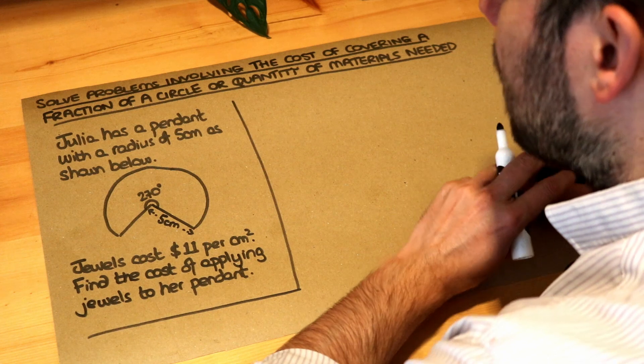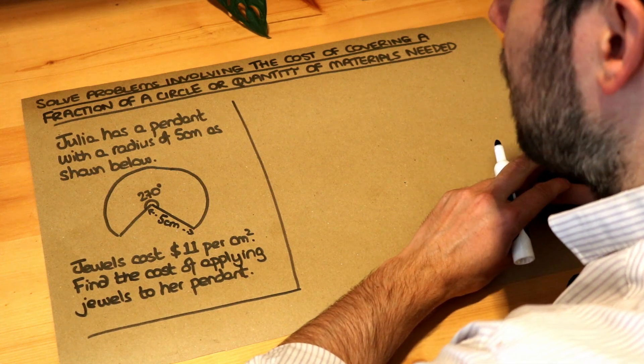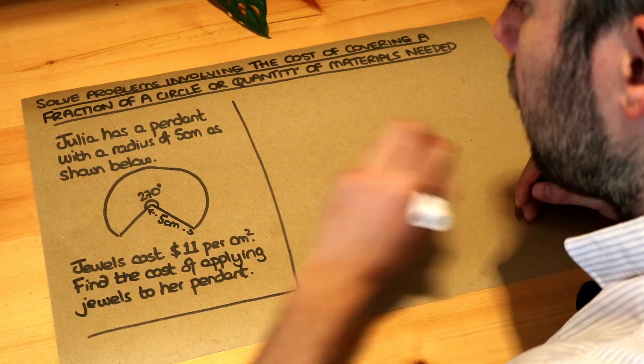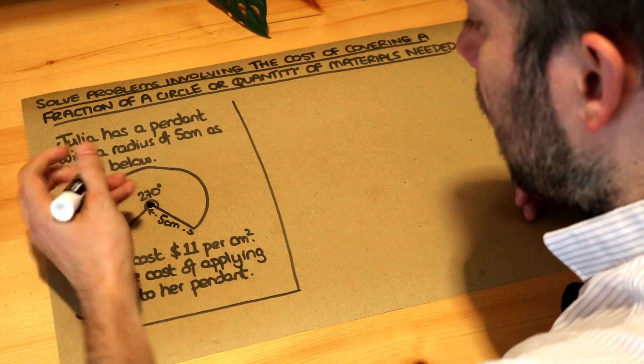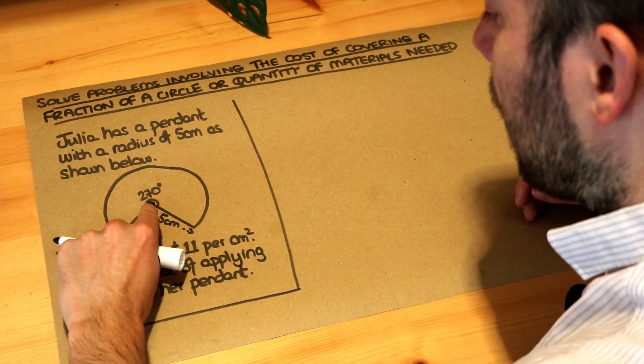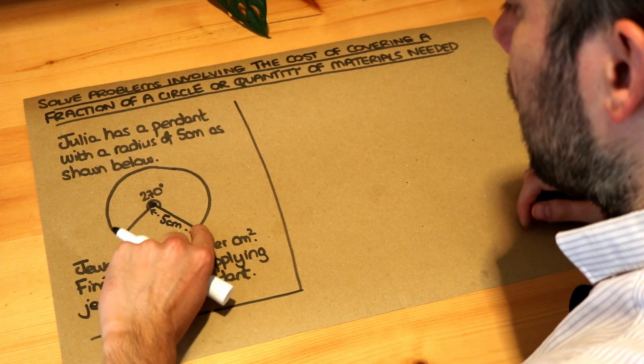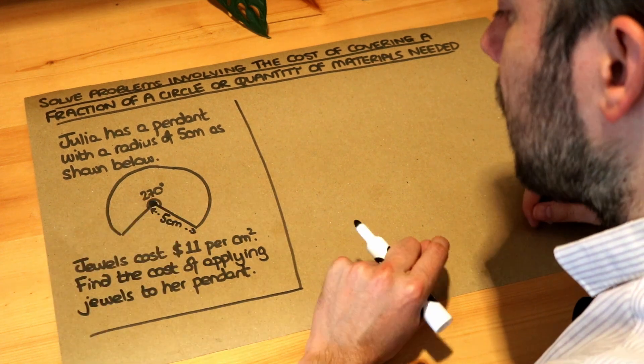Let's read the question. Julia has a pendant with a radius of five centimeters as shown below. Remember the radius of a circle is the line from the center of the circle to the circumference of the circle. So this length of the radius here is five centimeters.